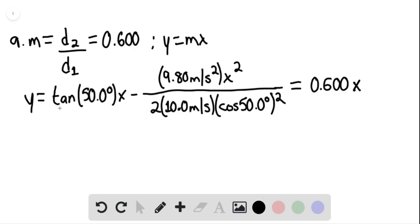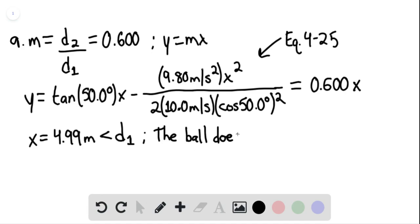This is from equation 4-25. We can then solve for x using the solve function on your TI-84, 85, or 89, and we find that x equals 4.99 meters. This is less than d sub 1, so we know that yes, the ball does land on the ramp.